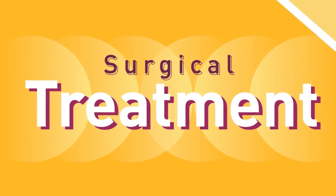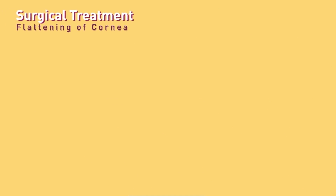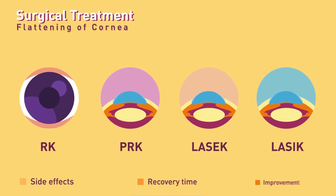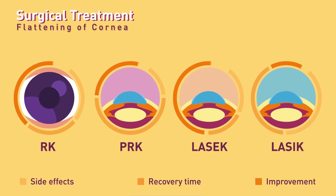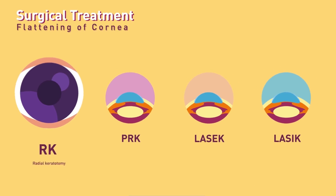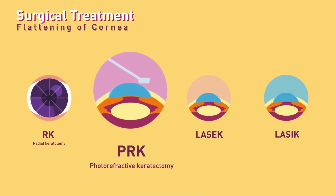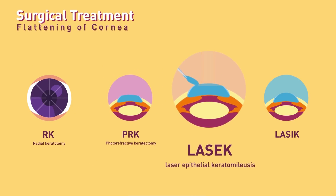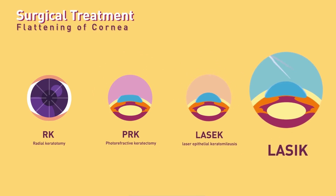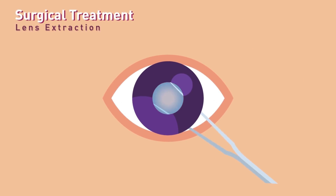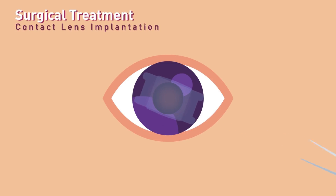Surgical treatment involves flattening the central part of the cornea. Different methods were developed and advanced depending on reduction of side effects, recovery time, and improvement of visual degree. Surgeries in this category include radial keratotomy, photorefractive keratectomy, laser epithelial keratomileusis, and laser in-situ keratomileusis. Other surgical treatment options include lens extraction and contact lens implantation.